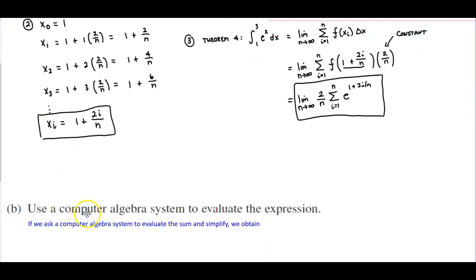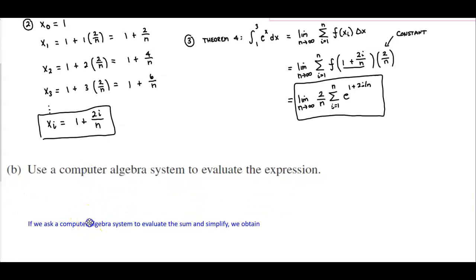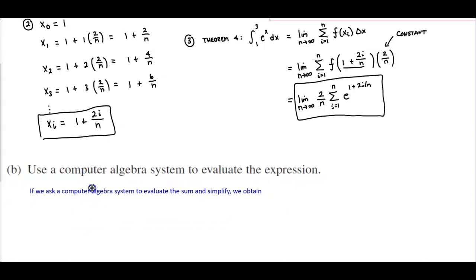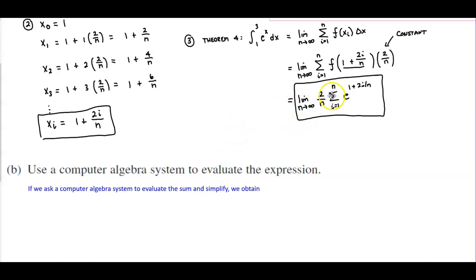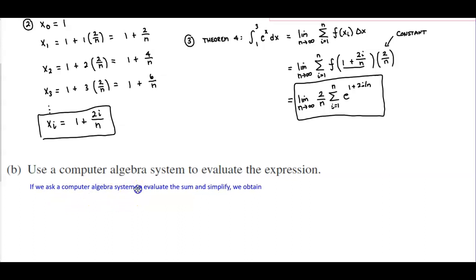Now for part b — I'm just going to show you this; it's not something you'll have to actually do. It says to use a computer algebra system to evaluate the sum and simplify. We would obtain the summation from i equals 1 to n of e to the power of 1 plus 2i over n.